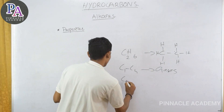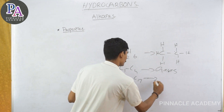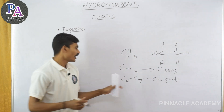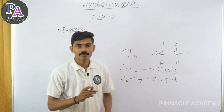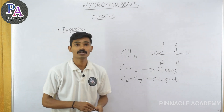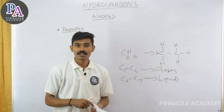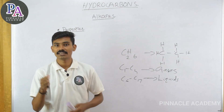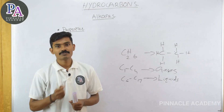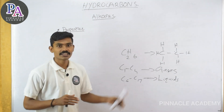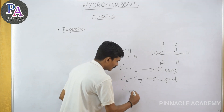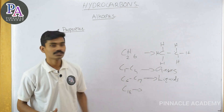C5 to C17 alkanes are liquids. Examples include petrol and diesel, which fall in the range of C9, C10, C11 and so on. C5 to C17 they are liquids. C18 and above — all those compounds are solids.